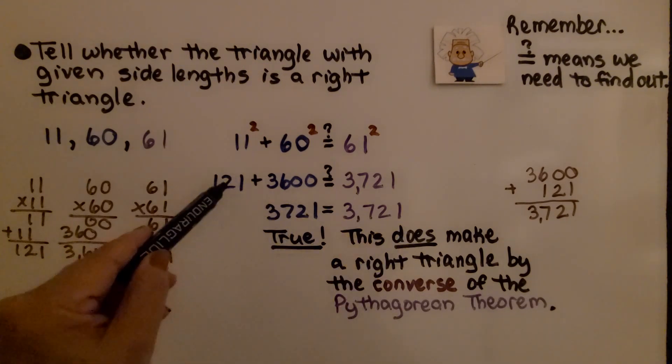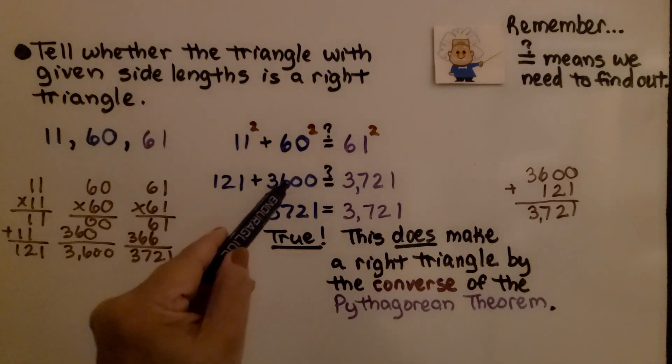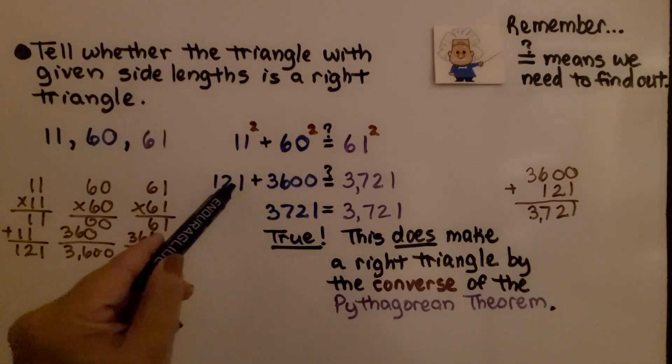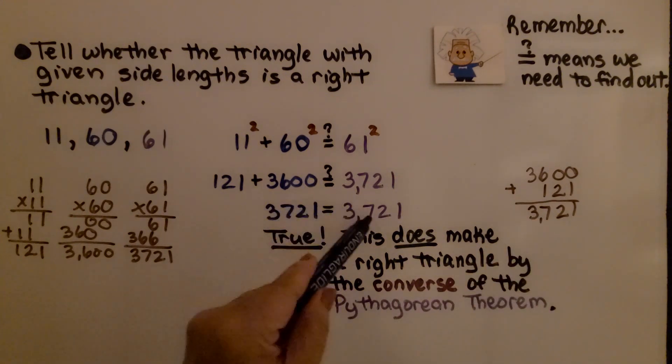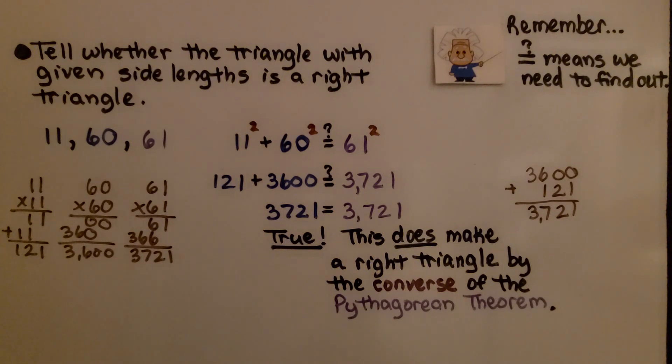When we add 3,600 plus 121, we get 3,721. So yes, they're equal. This is true. This does make a right triangle by the converse of the Pythagorean theorem.